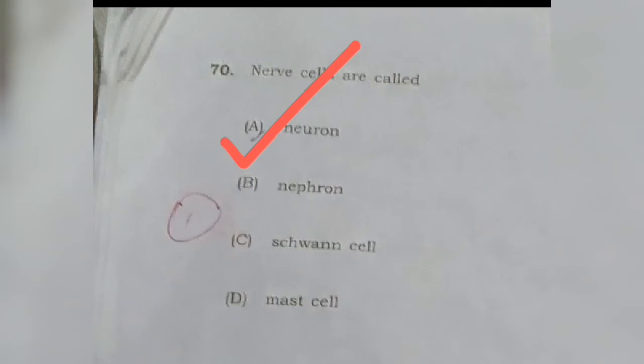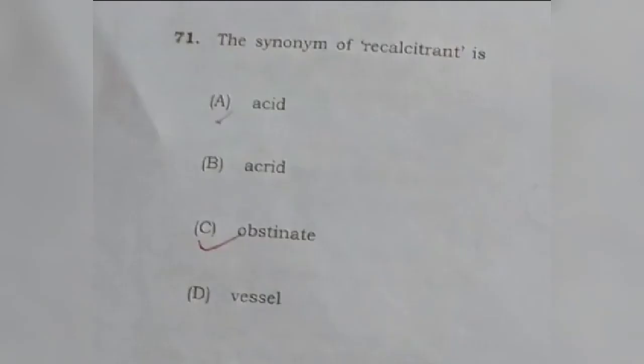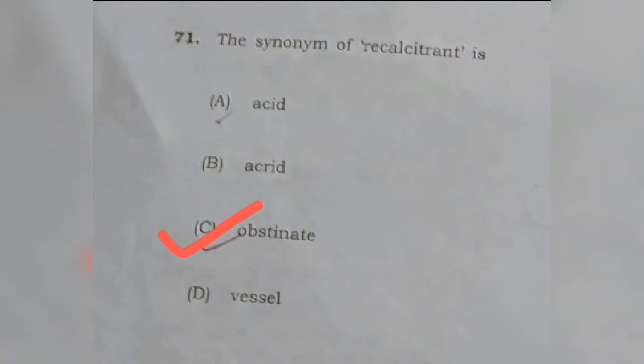Question 71: The synonym of recalcitrant — option C is the answer. Recalcitrant basically refers to someone who is impossible to control; you cannot set rules or instructions for that person. The synonym with the same meaning would be obstinate, option C.